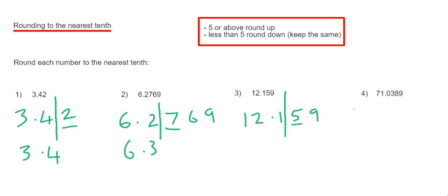Since the number after the line is a 5, we round the number up to 12.2.